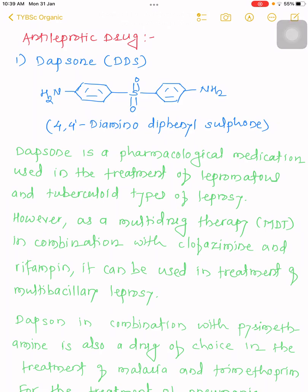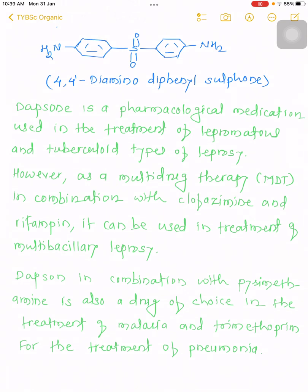The structure of dapsone is 4,4'-diaminodiphenyl sulfone — it contains a sulfone group and two amino groups on a diphenyl backbone. Dapsone is used in the treatment of lepromatous and tubercular types of leprosy. It is used for leprosy patients as part of multi-drug therapy.